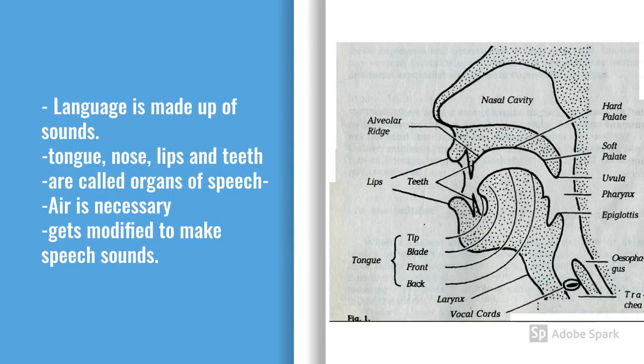Language is made up of sounds. We produce speech sounds with the help of certain organs like tongue, nose, lips and teeth. These organs are called organs of speech.